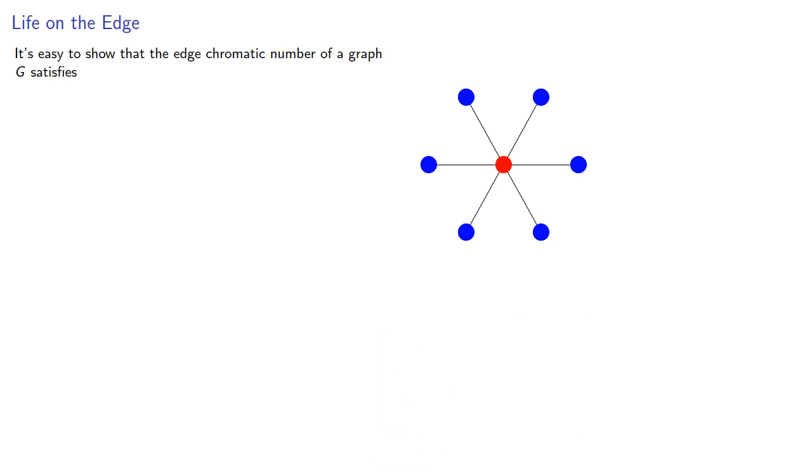It's easy to show that the edge chromatic number of a graph satisfies the inequality: the greatest degree is less than or equal to the edge chromatic number, since the delta incident edges on a vertex must have different colors. And we've seen it's possible for the edge chromatic number to be even greater.